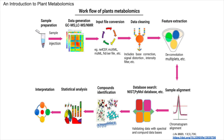Feature extraction aims to identify and quantify the features, or metabolites, in the datasets. This may involve deconvolution of overlapping signals, handling of multiplets, and other techniques to isolate individual metabolite signatures from the complex data. Compound identification: once features are extracted, they need to be identified as specific metabolites, often achieved by searching against databases like NIST or PiMOL, using the spectral data obtained from the instruments. Sample alignment ensures that a given feature is compared across different samples correctly, which often requires chromatogram alignment.